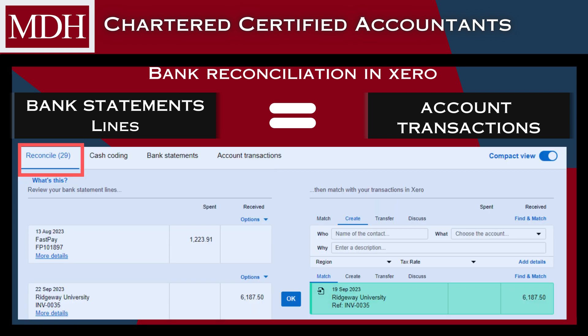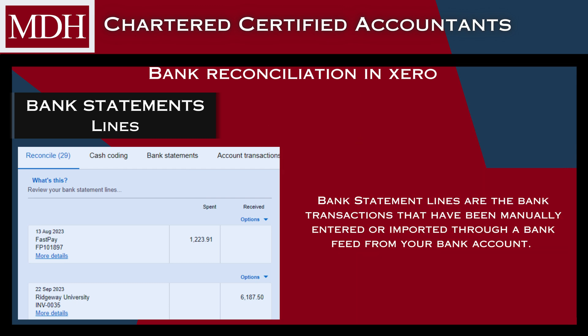This is accomplished in Xero under the Reconcile tab by matching the bank statement lines on the left with transactions on the right. Statement lines are the bank transactions that have been manually entered or imported through a bank feed from your bank account. They are known as bank transactions in your online banking, and we refer to them as bank statement lines when they are imported into Xero.